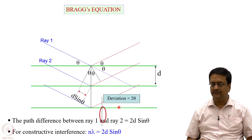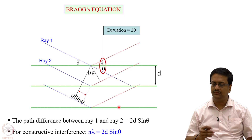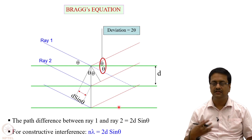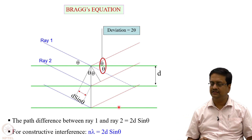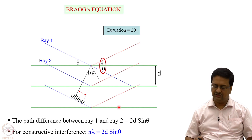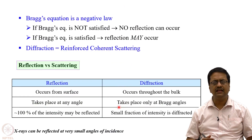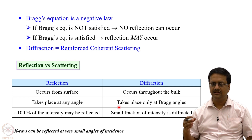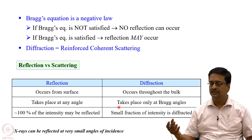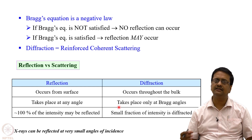From Bragg's law, we have nλ = 2d sinθ. X-rays fall on the sample and get diffracted from the bulk, and constructive interference only happens when the path difference is equal to an integral multiple of the wavelength. Bragg's equation is a negative law — if it is not satisfied then no reflection occurs, but if it is satisfied a reflection may occur.